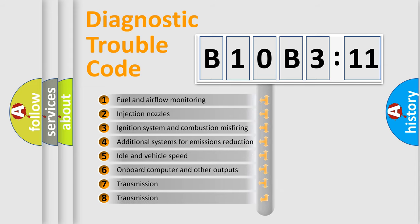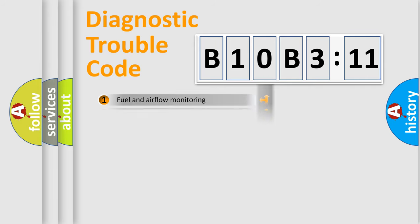The third character specifies a subset of errors. The distribution shown is valid only for the standardized DTC code.